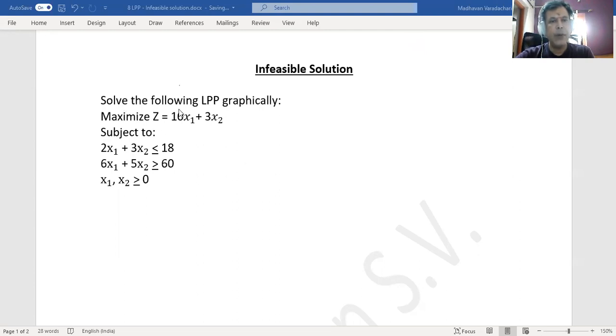Solve the following LPP graphically. Maximize z which is equal to 10 times x1 plus 3 times x2, subject to 2x1 + 3x2 less than or equal to 18, 6x1 + 5x2 greater than or equal to 60, and the non-negativity restrictions x1 and x2 greater than or equal to 0.